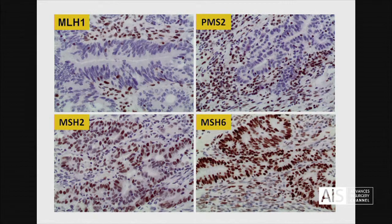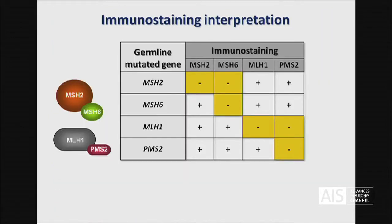We can see loss of nuclear expression of these four proteins in the tumors. The pattern of loss of expression in the tumor will tell us which gene is mutated in the germline.